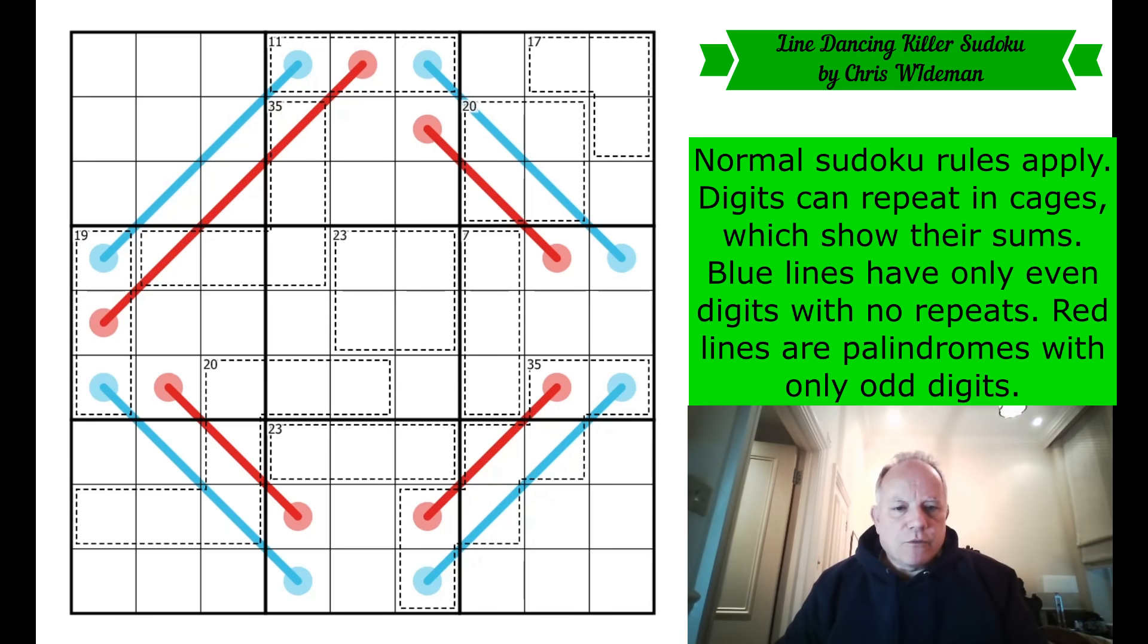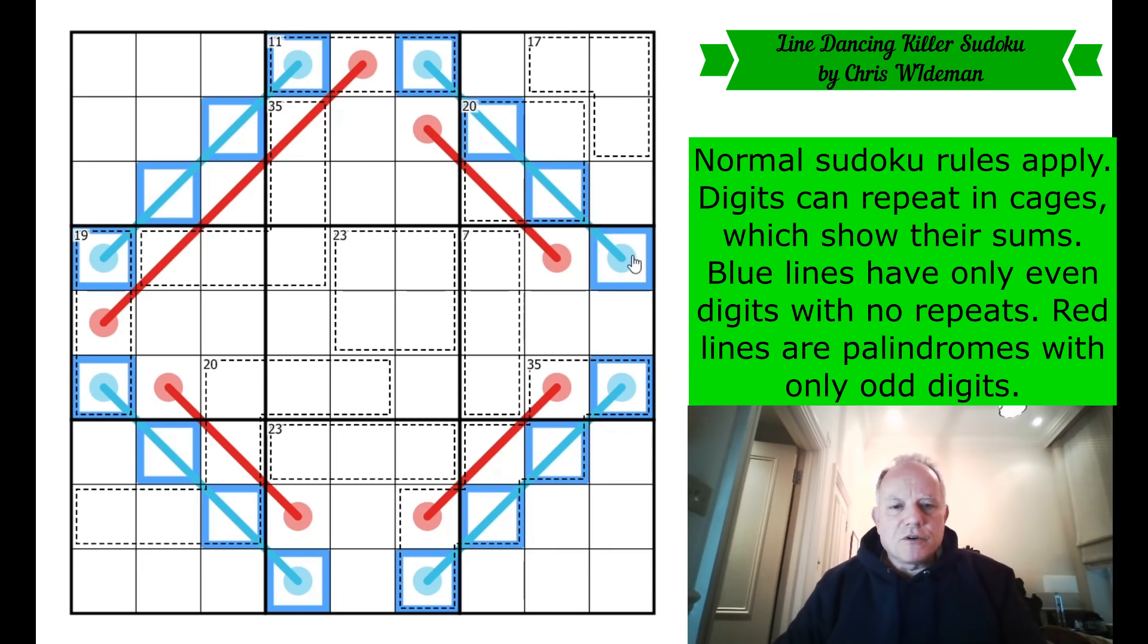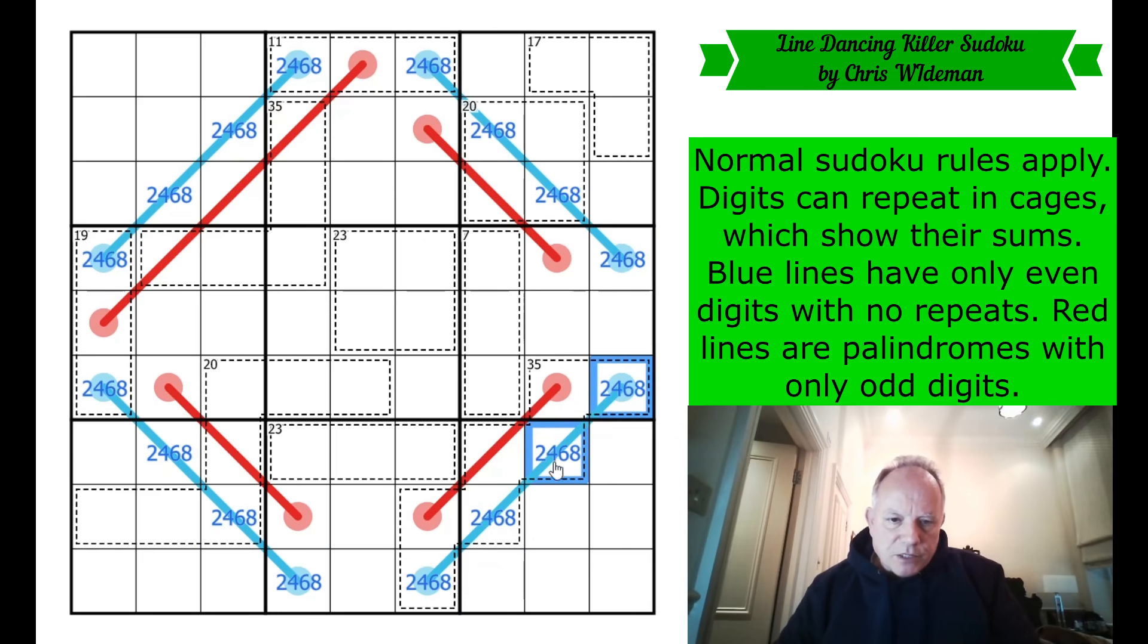I'm going to start with the blue lines. Because if they are even digits that don't repeat, they are all, each line is a set of 2, 4, 6 and 8. Now that seems quite useful in this one, because they're all in this 35 cage, and they add up to 20. So these three add up to 15. Now, the last rule was that lines of the same length have the same sums. So all the three-digit lines add up to 15.